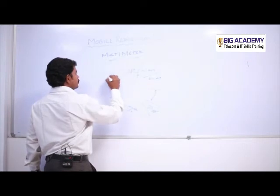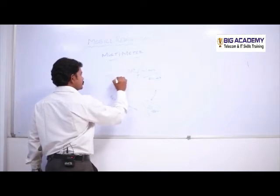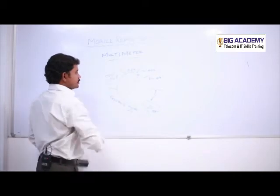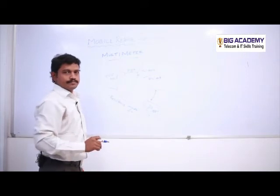And finally the DC voltage. And this is the different parts of a multimeter.